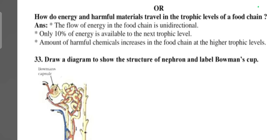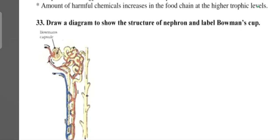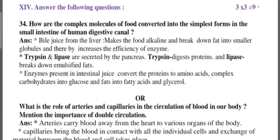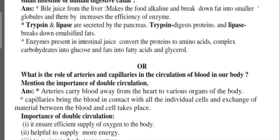Next one: draw a diagram showing the structure of nephron and label the Bowman's capsule. This is the answer. Next main, three mark question. How are complex molecules of food converted into simplest form in the small intestine of human digestive canal? Or, what is the role of the arteries and capillaries in the circulation of blood in our body? Mention the importance of double circulation. I'm not reading answers here because video is becoming more longer.